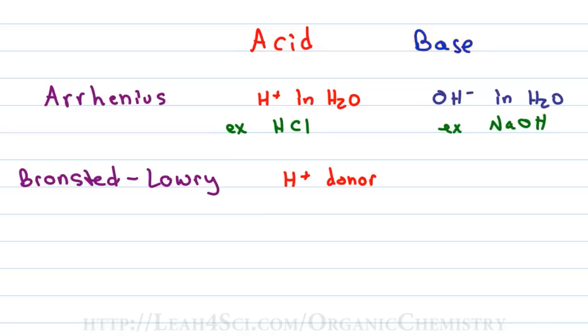So for example, if I take HCl and I dissolve it in ammonia which is NH3, it'll still break up to give me H+ and Cl-, but because it's not in water, it's not an Arrhenius acid, but the fact that it still donates an H+ makes it a Bronsted-Lowry acid.